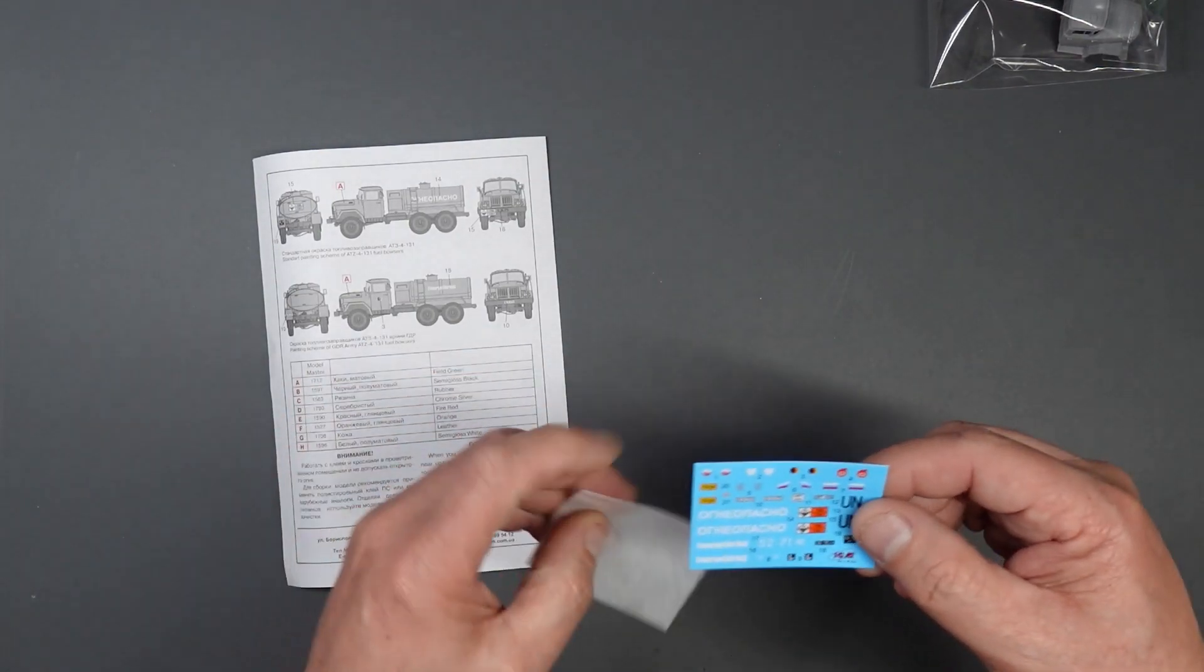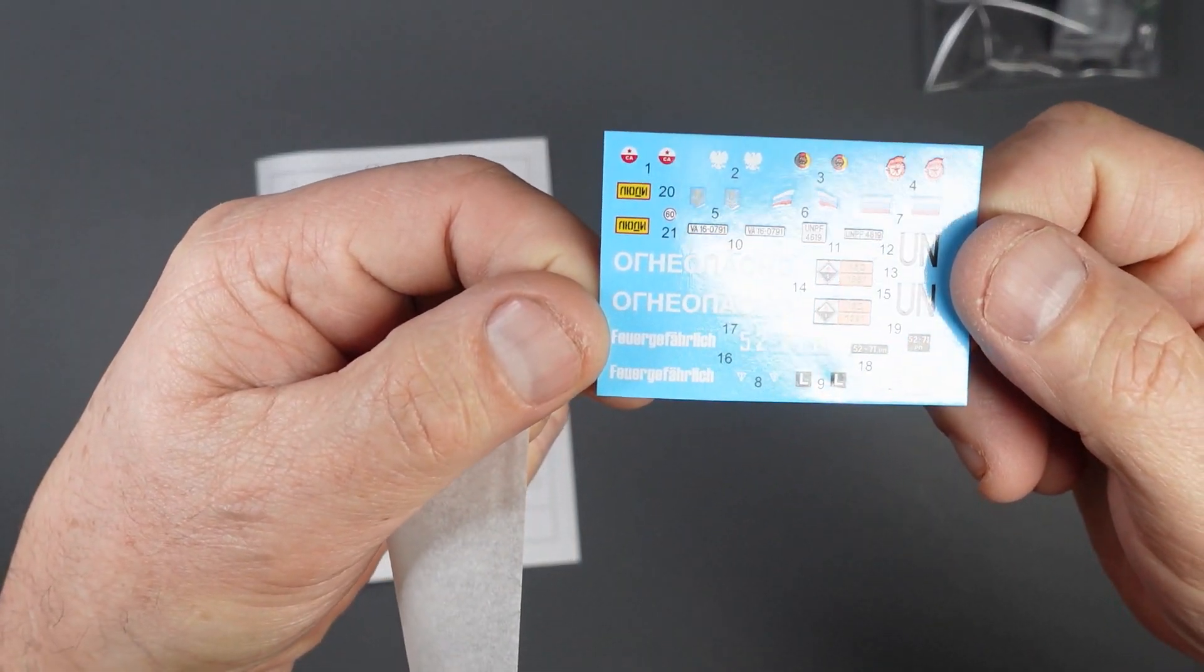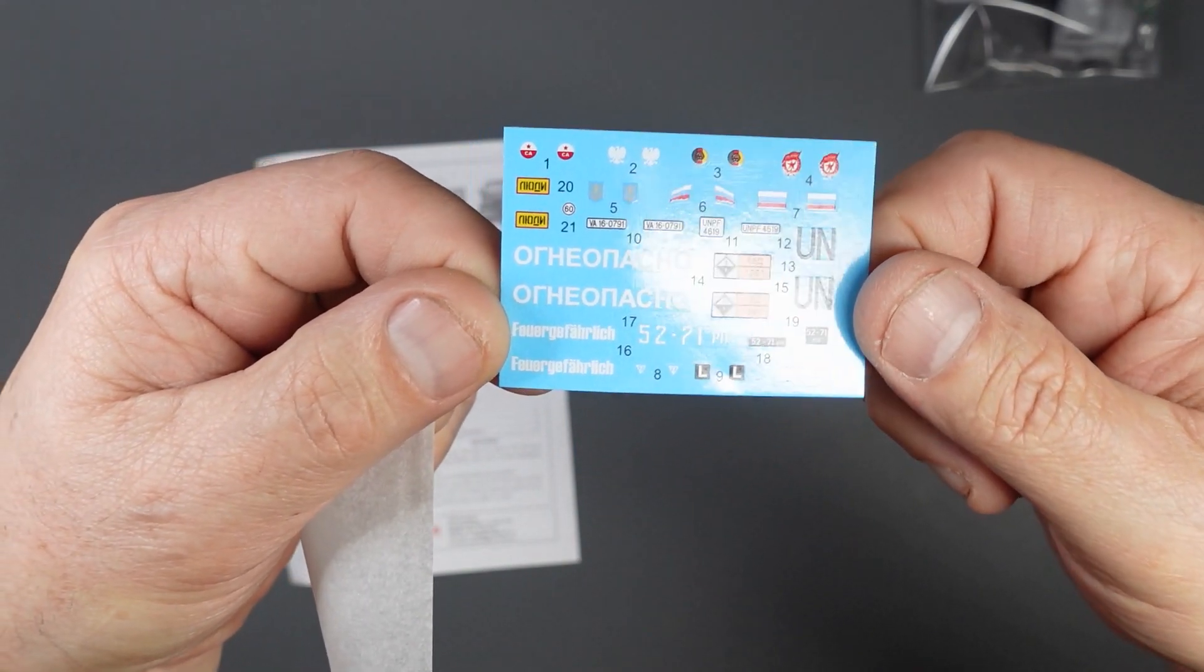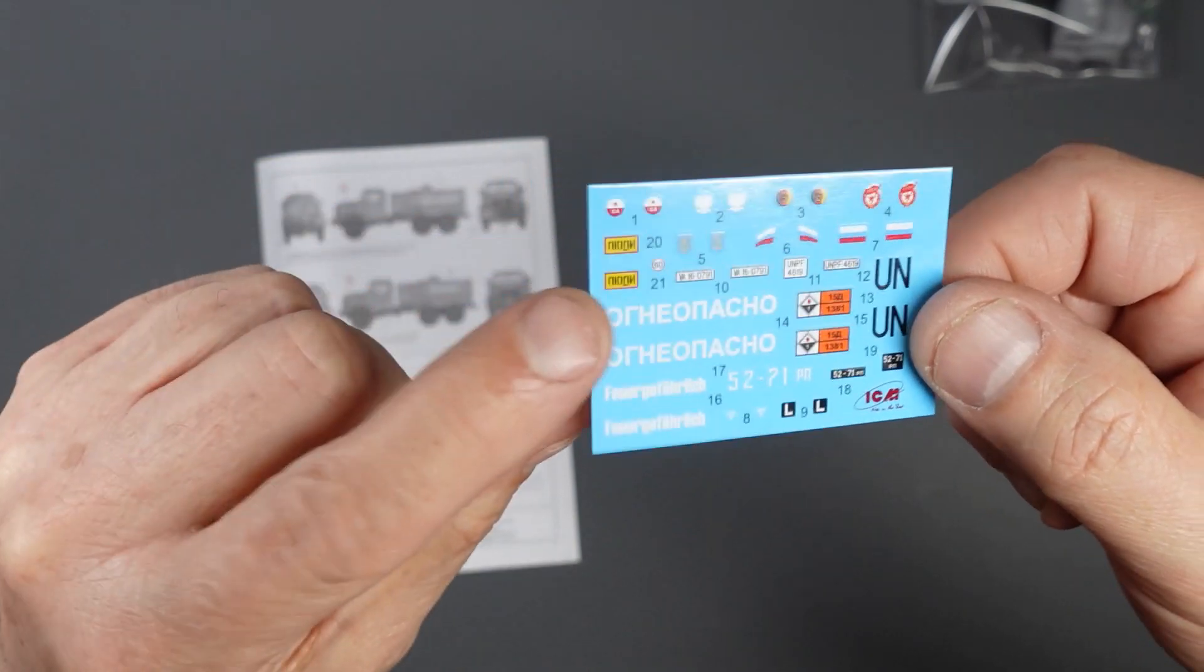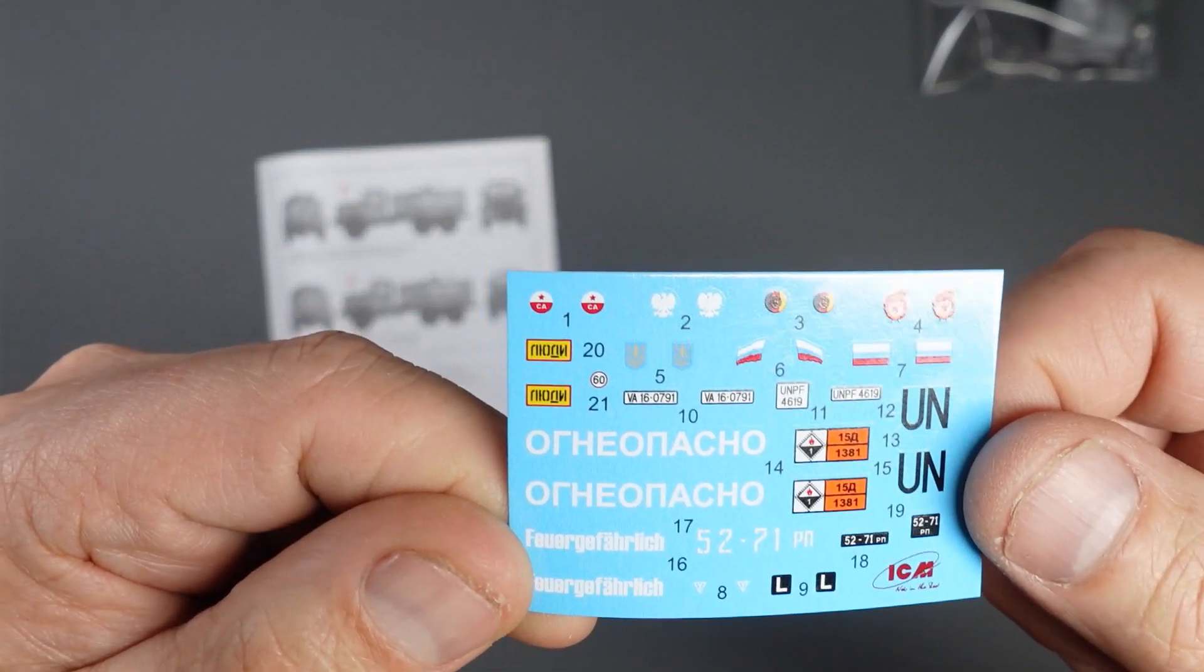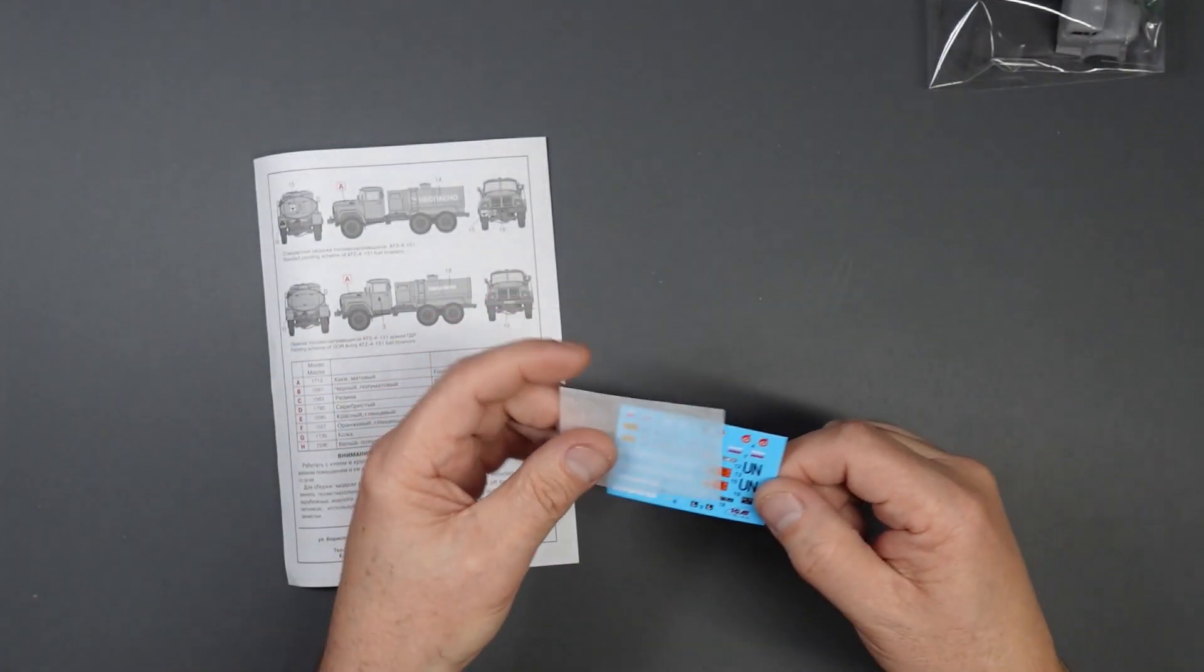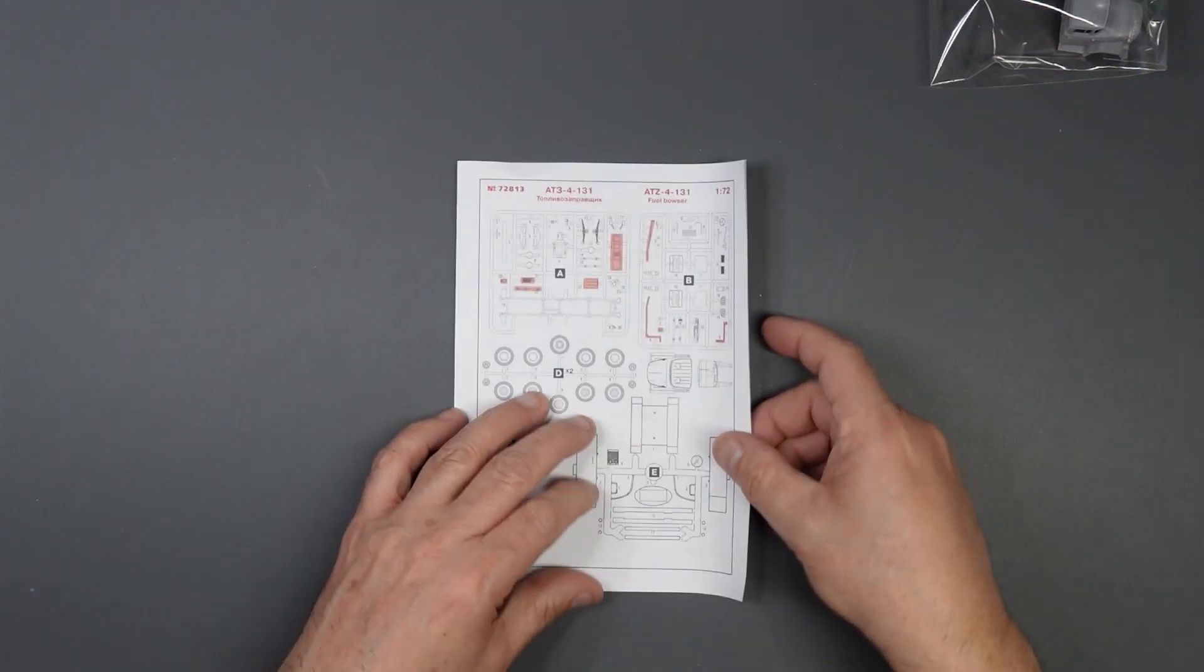So you can see on here we have a decal sheet with much more than just the standard Russian or the German. We've actually got Ukrainian and all sorts on here. So I will obviously build this as a Ukrainian aircraft to park alongside something else Ukrainian. So there we go. So that's the decal sheet. And as you can see, lots and lots on there.